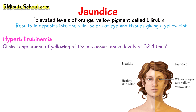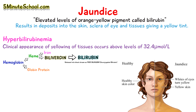Bilirubin formation has been covered in another video, linked in the description below. As a quick summary: bilirubin comes from red blood cells. We have the hemoglobin inside of a red blood cell — the heme group is broken down to release iron and biliverdin, and biliverdin is reduced into bilirubin. So that's how bilirubin is made in the body.